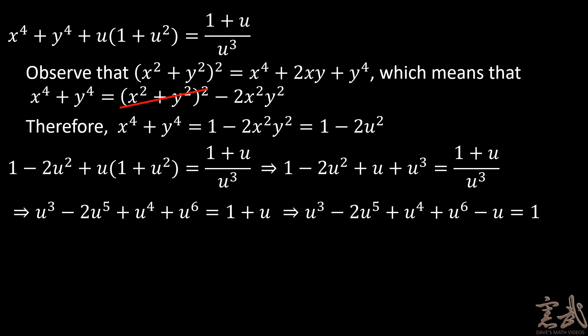Finally, I'm going to move the u to the other side of the equation and rearrange so that I'm going to get u to the sixth minus 2u to the fifth plus u to the fourth plus u cubed minus u is equal to 1.